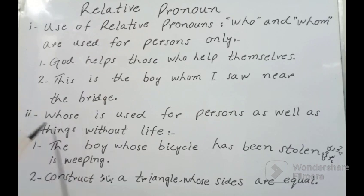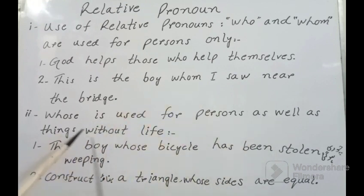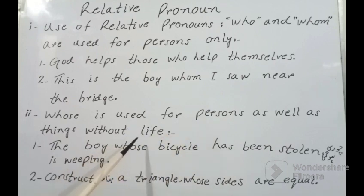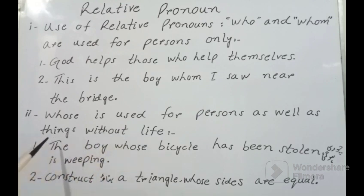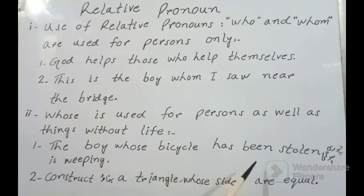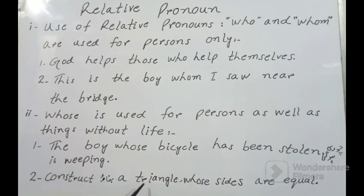Number two point: 'whose' is used for persons as well as things without life. یعنی whose persons کے لیے اور بے جان چیزوں دونوں کے لیے استعمال ہوتا ہے. Example one: 'The boy whose bicycle has been stolen is weeping' — لڑکا جس کی سائیکل چوری ہو گئی رو رہا ہے. Example two: 'Construct a triangle whose sides are equal' — ایک triangle بناو جس کی sides برابر ہوں.